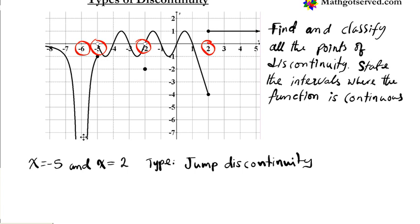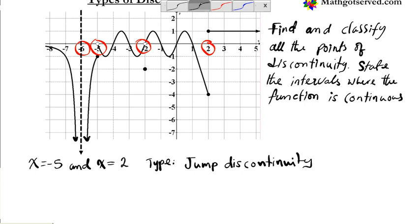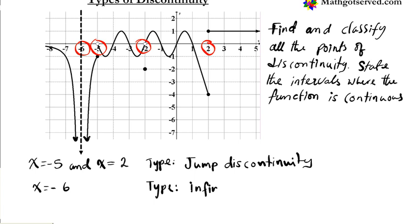At x equals negative 6, you might think there's a jump discontinuity, but certainly not. The graph is going down and approaching the value negative 6, but does it ever get there? Absolutely not. This is a case where you have an asymptote — an asymptote is a special kind of discontinuity. Since it never actually gets to that limiting value, that kind of discontinuity is known as infinite discontinuity at x equals negative 6.